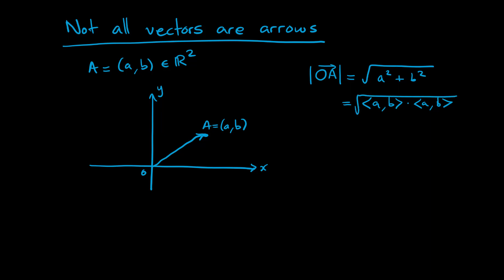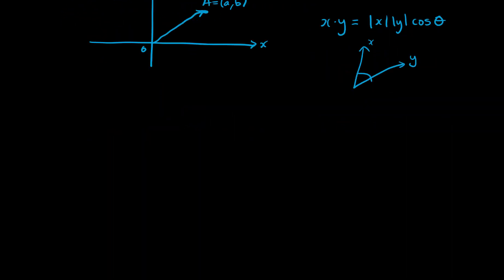We can also recall the formula that says x dot y equals |x||y| cosine theta, assuming that x and y are vectors. And theta is the angle between x and y. Now, not all vectors can be drawn in this way.